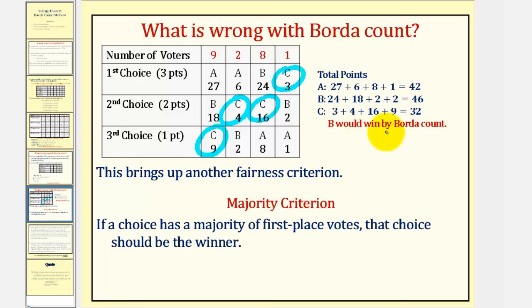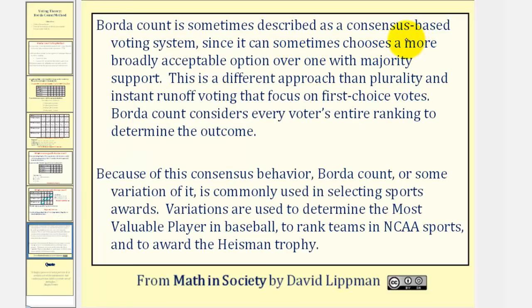This brings up another fairness criterion: the majority criterion — if a choice has a majority of first place votes, that choice should be the winner. Borda Count is sometimes described as a consensus-based voting system, since it can sometimes choose a more broadly acceptable option over one with majority support. This is a different approach than plurality and instant runoff voting, which focus on first choice votes. Borda Count considers voters' entire ranking to determine the outcome. Because of this consensus behavior, Borda Count, or some variation of it, is commonly used in selecting sports awards — such as the most valuable player in baseball, team rankings in the NCAA, and the Heisman Trophy.